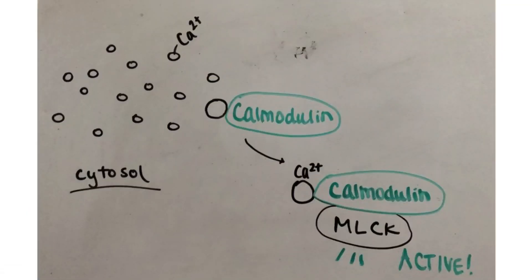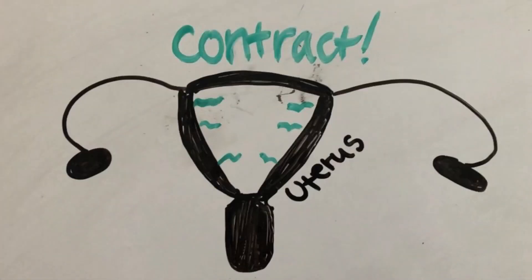Calcium will bind to calmodulin and activate MLCK. This MLCK will phosphorylate the light chain of myosin and increase the ATPase activity. Finally, the active myosin will slide and bind actin to increase muscle tension.